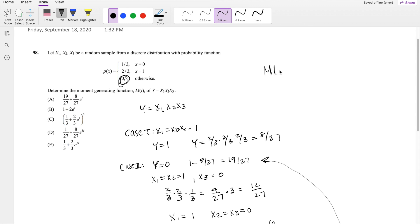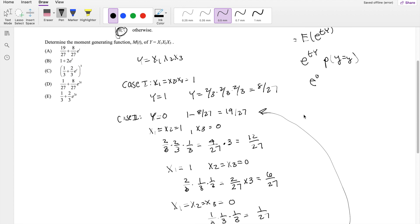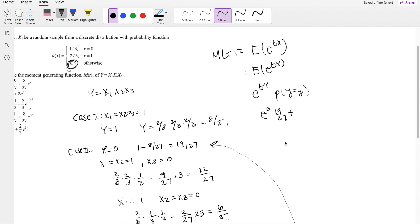But anyways, moment generating function by definition is equal to the expected value of e to the ty. Expected value by definition is just that value times the probability of that value. So if y equals 0, then this is e to the 0 power times the probability that y equals 0, which is 19/27. And we also know that it could also be 1. So now it's e to the t, if I plug in 1, you're still left with t. And the probability that y equals 1 is 8/27.